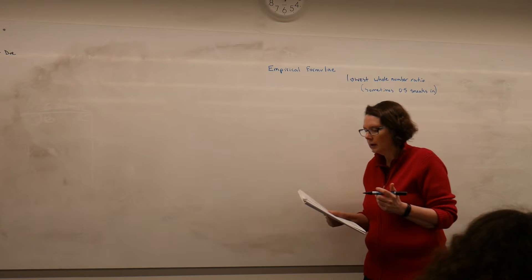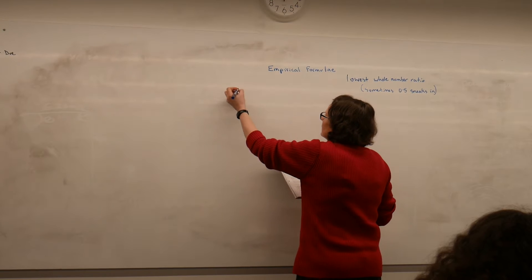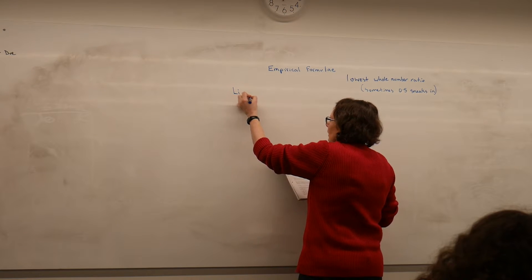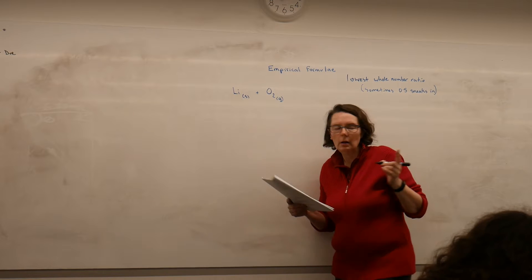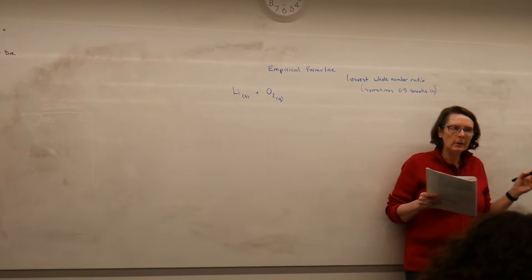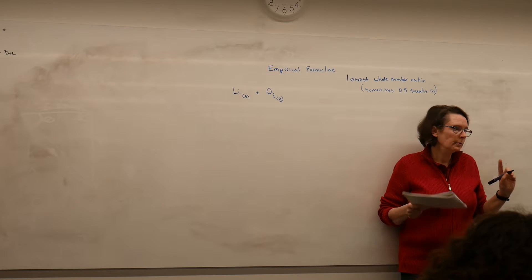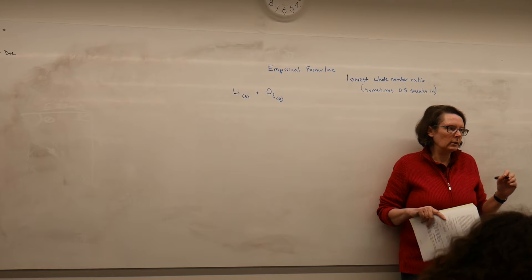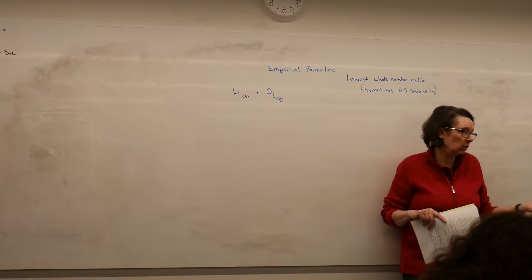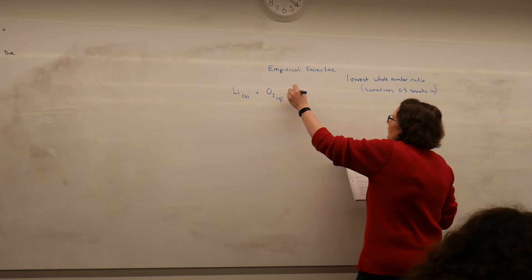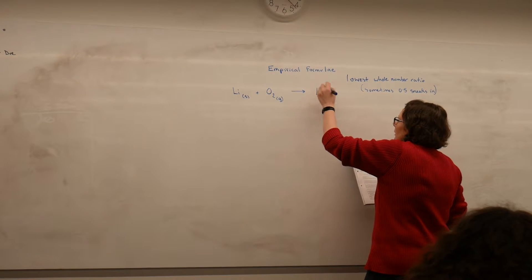So let's have a look at our worked example on the top of page 27. We've got some lithium metal reacting with oxygen in the air, so that means it must be O2 gas because we know that oxygen in the atmosphere is a diatomic molecule, not the element. And we're going to produce lithium oxide.